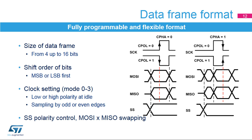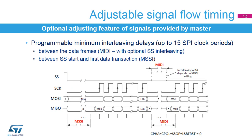The slave select signal can be used with both polarities, and the functionality of the MOSI and MISO signals can be swapped. Several parameters can be used to optionally adjust the timing of the master transaction flow. Signal timings for the master node can be adjusted when needed — for example, when a slave node needs a longer time to wake up from sleep mode following the setup of the SS active edge, or when the slave is not able to handle a data flow that is too fast. Up to 15 additional serial clock signal period delays can be inserted by MIDI or MISI parameters.